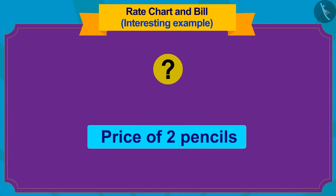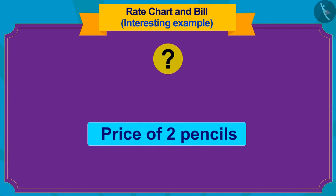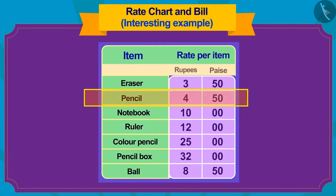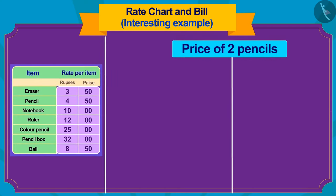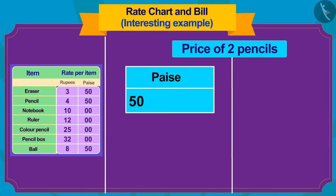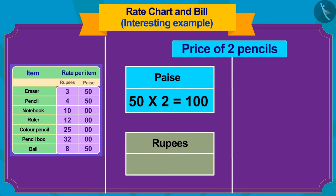First, we will find the price of two pencils. The price of one pencil is 4 rupees 50 paise. So how much will two pencils cost? First, we multiply the paisa number 50 by 2, which gives us 100 paise. Now we multiply the rupee number 4 by 2, which gives us 8 rupees.